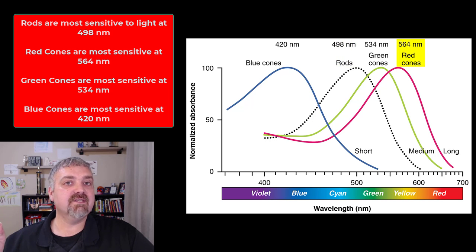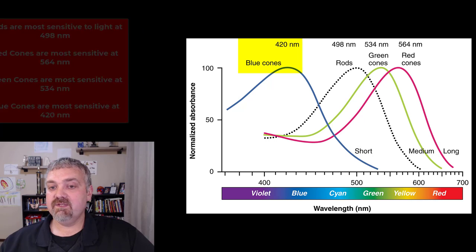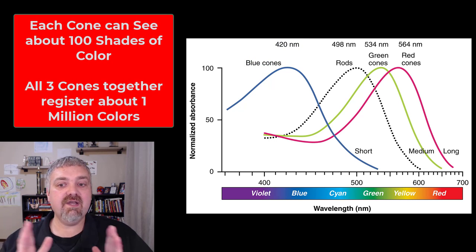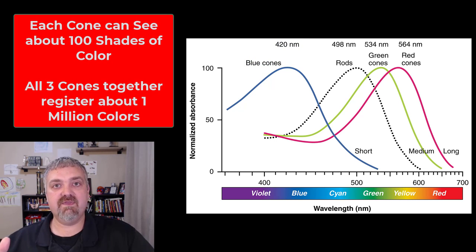For the three color opsins, red is at 564 nanometers, green at 534, and blue at 420 nanometers. Each of these cones can see about 100 shades of color within those wavelength ranges.